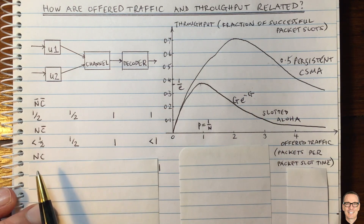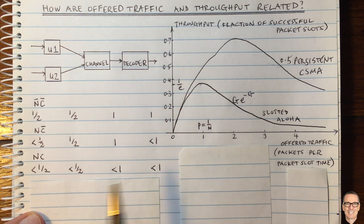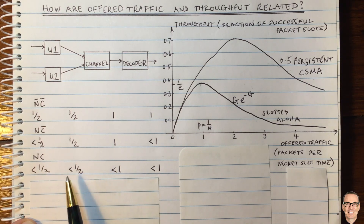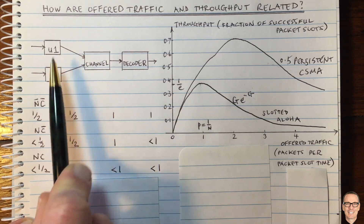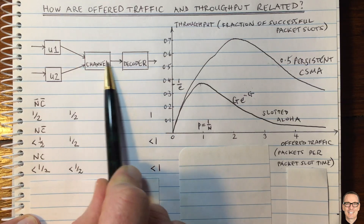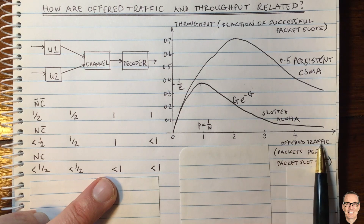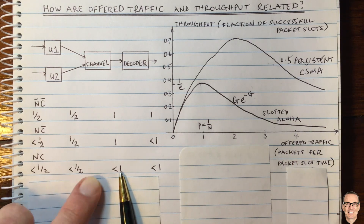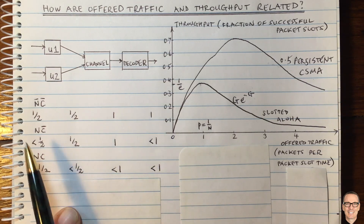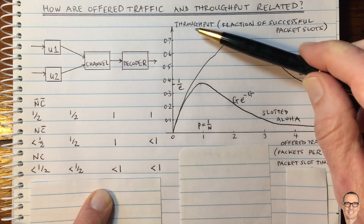Now let's think about when there's both noise and collisions. In this case, you're definitely going to have a throughput less than one, and you can send less than half per user. With collisions, you can't guarantee half the slots per user — some will be colliding and slots will go missing. So you'll definitely have an offered traffic of less than one, and per user it will be less than one half. Hopefully these scenarios give you an insight into offered traffic and its relationship to throughput.